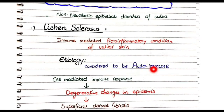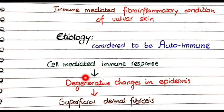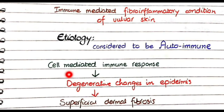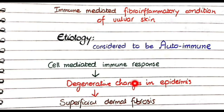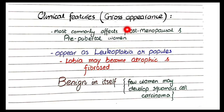The etiology of lichen sclerosis is considered to be autoimmune. The pathogenesis involves a cell-mediated immune response — specifically by T lymphocytes rather than B lymphocytes. These T lymphocytes arrive at the vulva and cause degenerative changes in the epidermis, resulting in superficial dermal fibrosis.